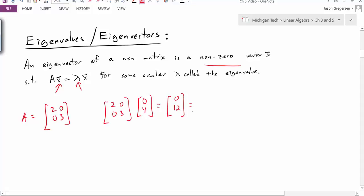But what I can see is that this vector [0, 12] is really just 3 times my original vector. So in this way I could say for the matrix A I have an eigenvalue of 3 and an eigenvector of [0, 4]. And together these form an eigenpair. So because these two values satisfy this equation, this would be an eigenvalue and an eigenvector.